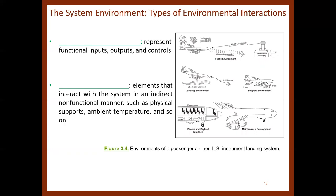Types of environmental interactions differ. Primary interactions represent functional inputs, outputs, and controls. Secondary interactions are elements that interact with the system in an indirect, non-functional manner, such as physical supports and ambient temperature. Figure 3.4 shows the environments of a passenger airliner, including the flight environment, the landing environment, the support environment, the people and payload interface, and the maintenance environment.